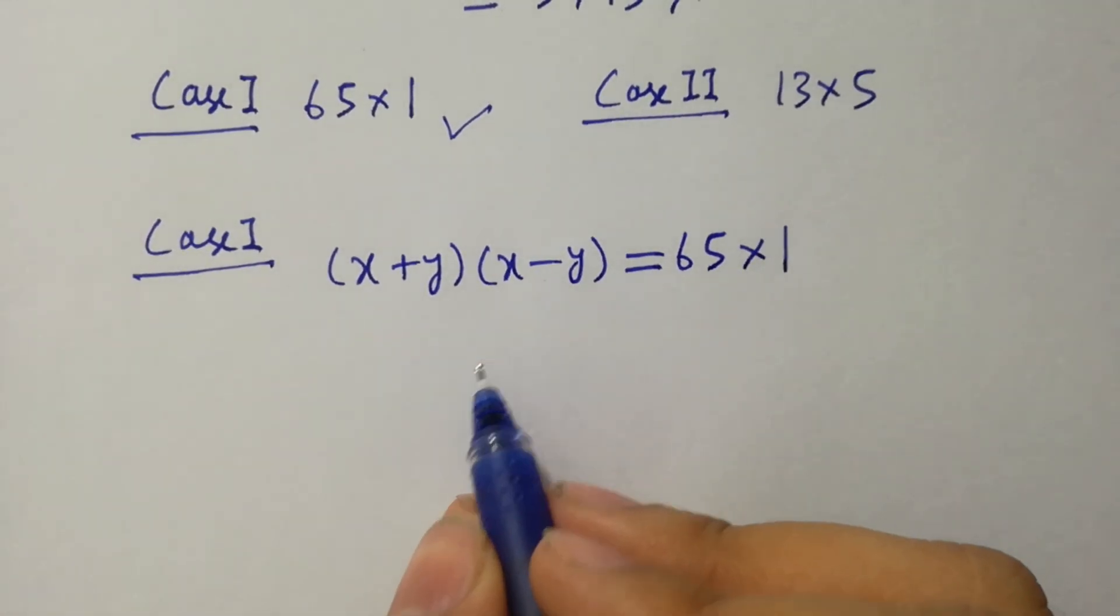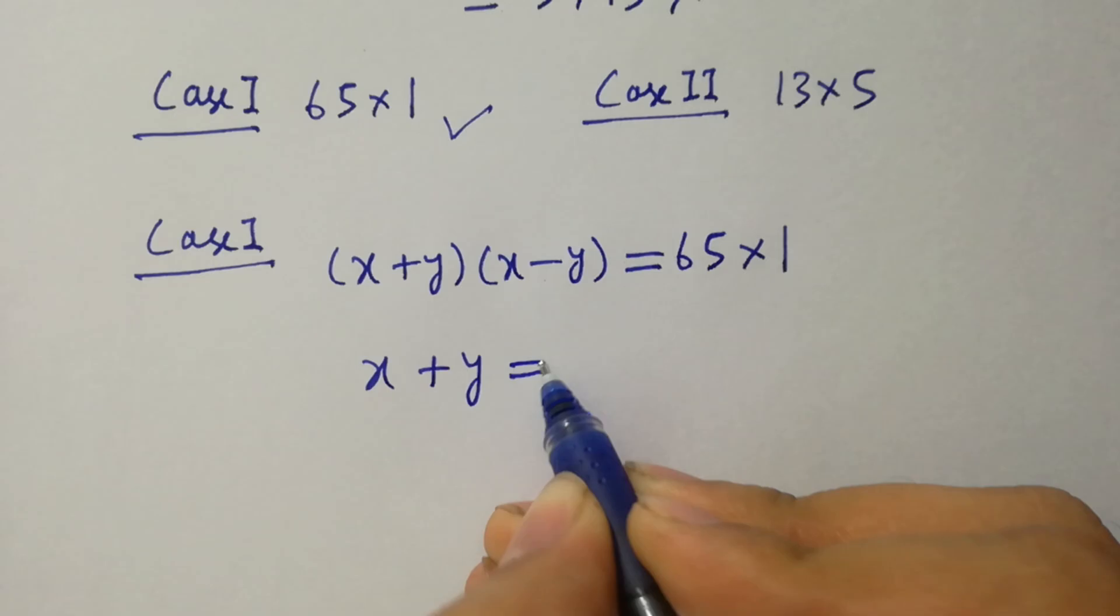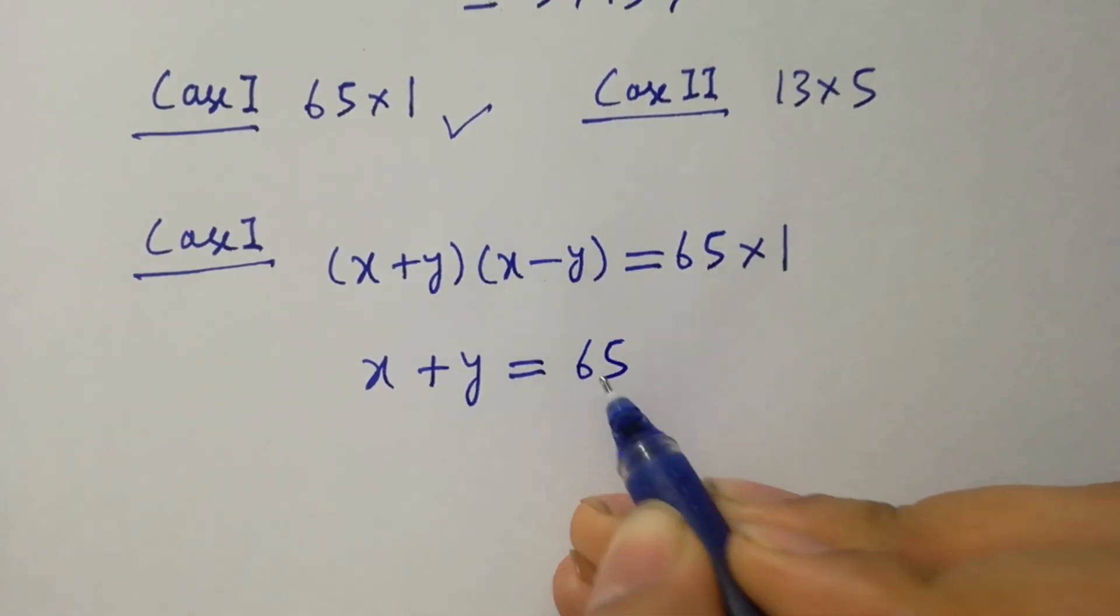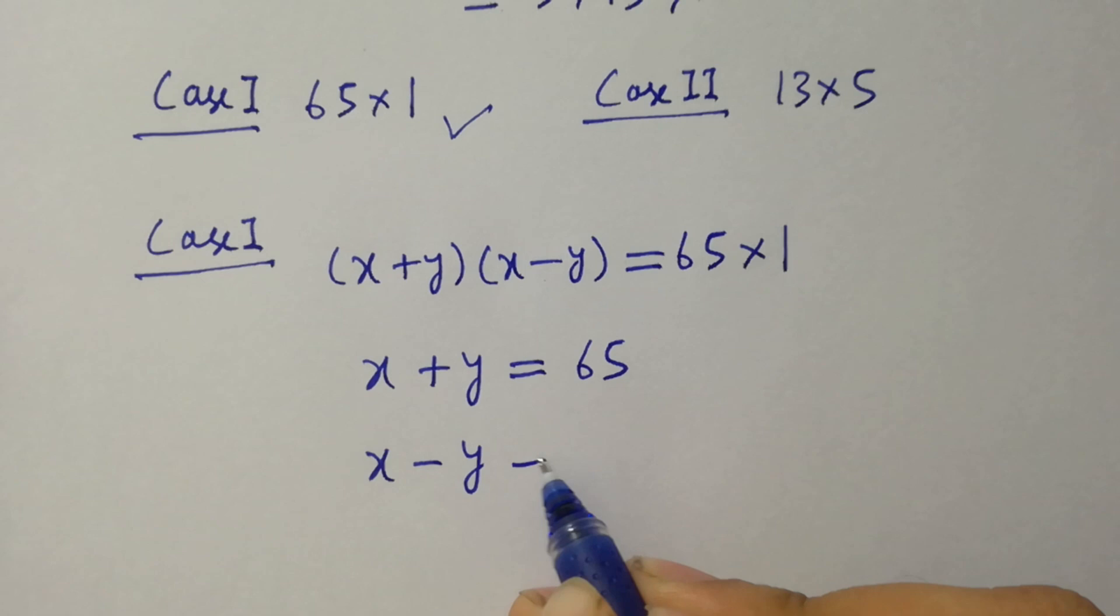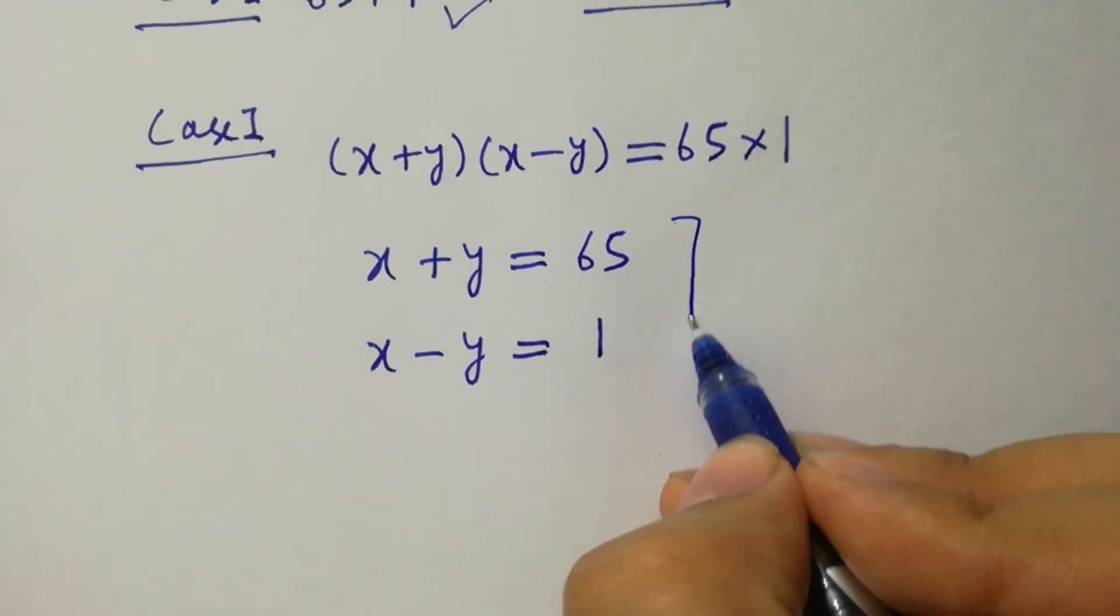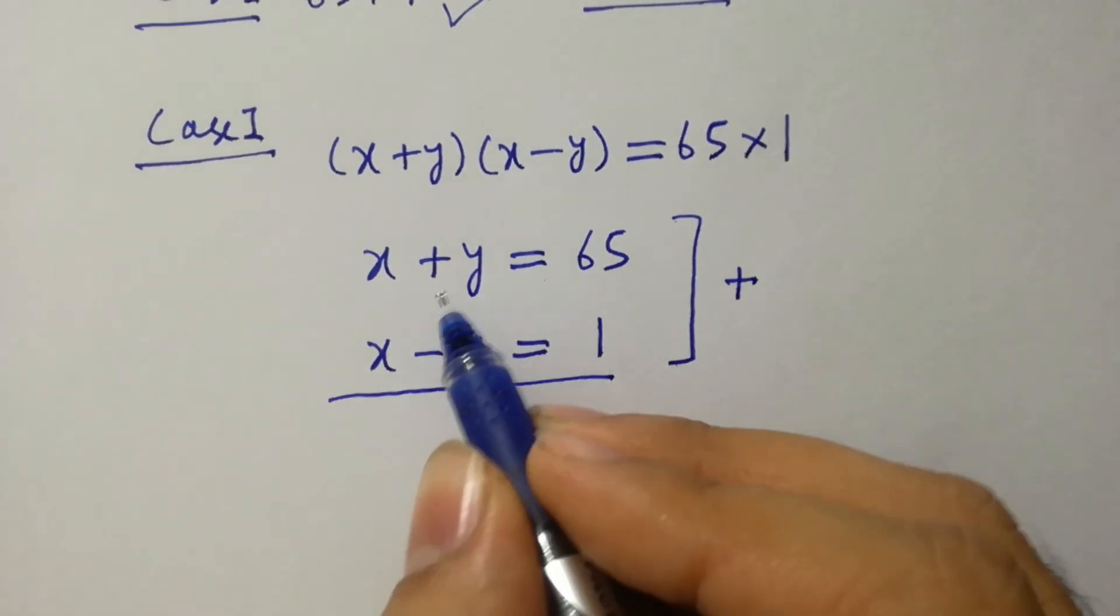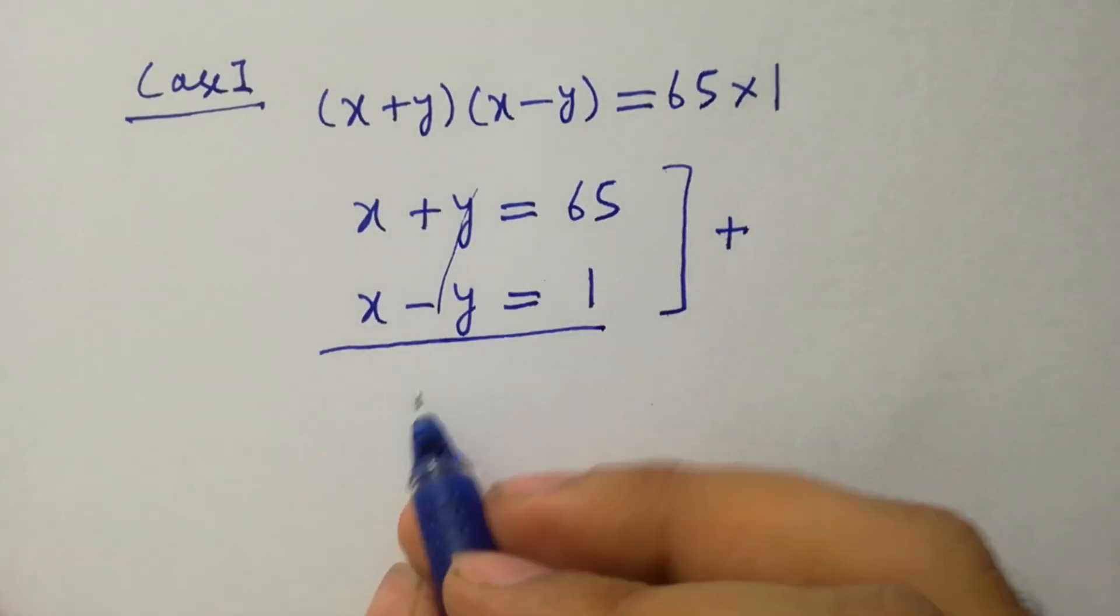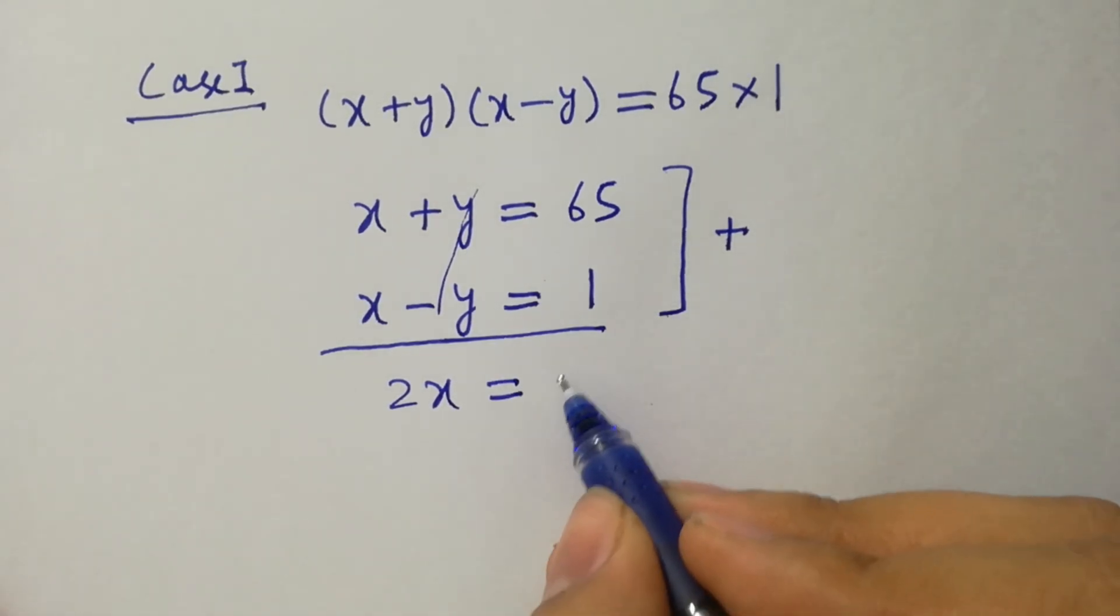By comparing x plus y equal to 65, x minus y equal to 1. Add them. Y cancels, x plus x is 2x, equal to 65 plus 1 is 66.